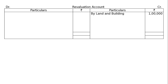Revaluation account: Land and building was found undervalued by Rs. 1,00,000, hence we bring it up to par by Rs. 1,00,000. Increase in asset is a gain to the firm — debit land and building Rs. 1,00,000. Stock was found overvalued by Rs. 31,000, hence we reduce the value by Rs. 31,000.